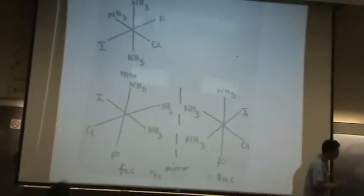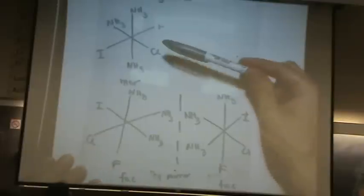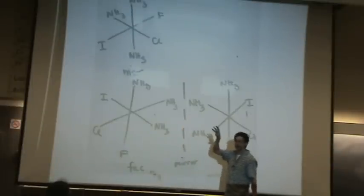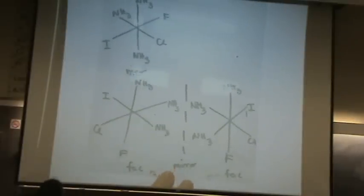Mer is like trans. The question is, what's the difference between mer and fac? So mer is like trans, meaning that two of the three are on the same axis. See how these are on the same z-axis here? Where here, each are on a different axis. That's the difference between fac. Fac is like cis, where they're all on different axes. Mer is like trans, where at least one set is on the same axis. So you'd have three answers here.